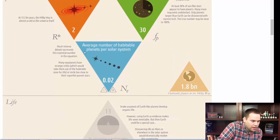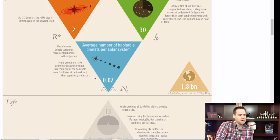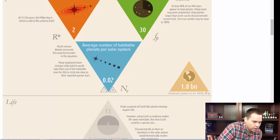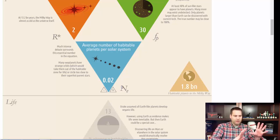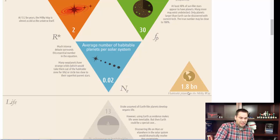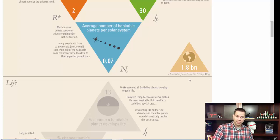The average number of habitable planets per solar system — there's a lot of debate here. Our solar system has one. The skeptical preset is 0.02, that's one in fifty, and that's as low as it goes. Using these values, it says in just our Milky Way galaxy there are 1.8 billion habitable planets with liquid water on their surface — a huge number.